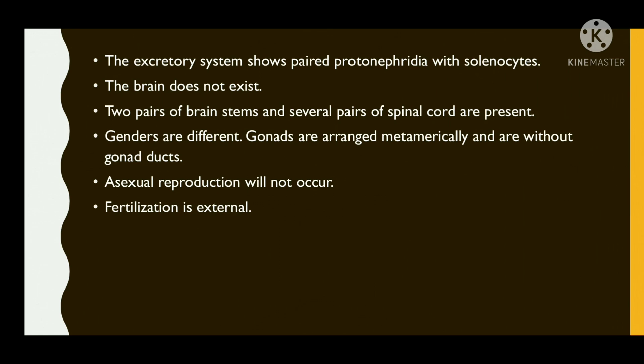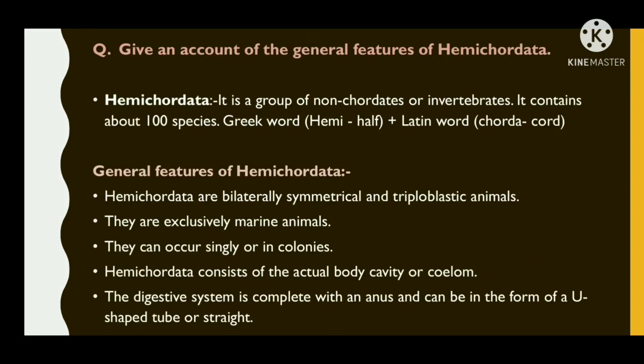Examples of cephalochordata are Amphioxus or lancelet. Hemichordata is a group of non-chordates or invertebrates. It contains about 100 species.